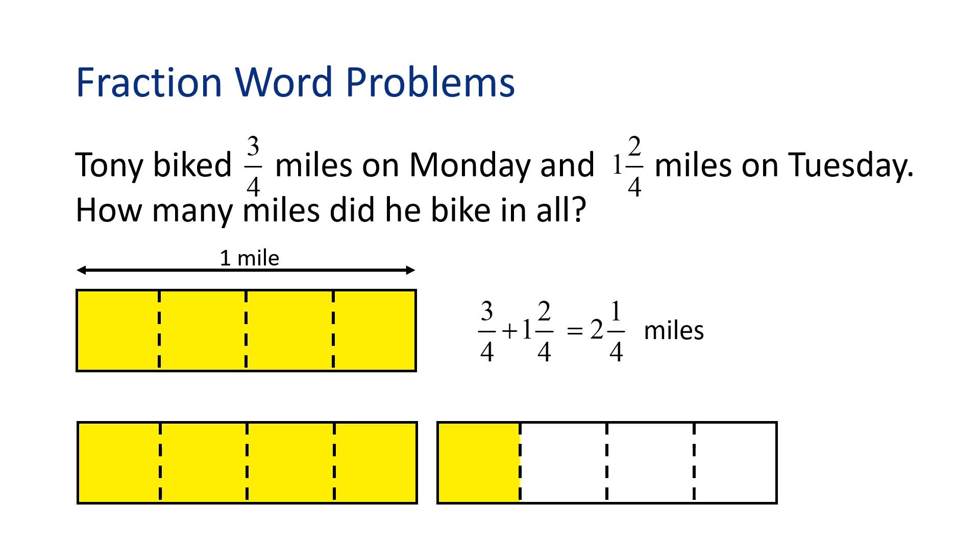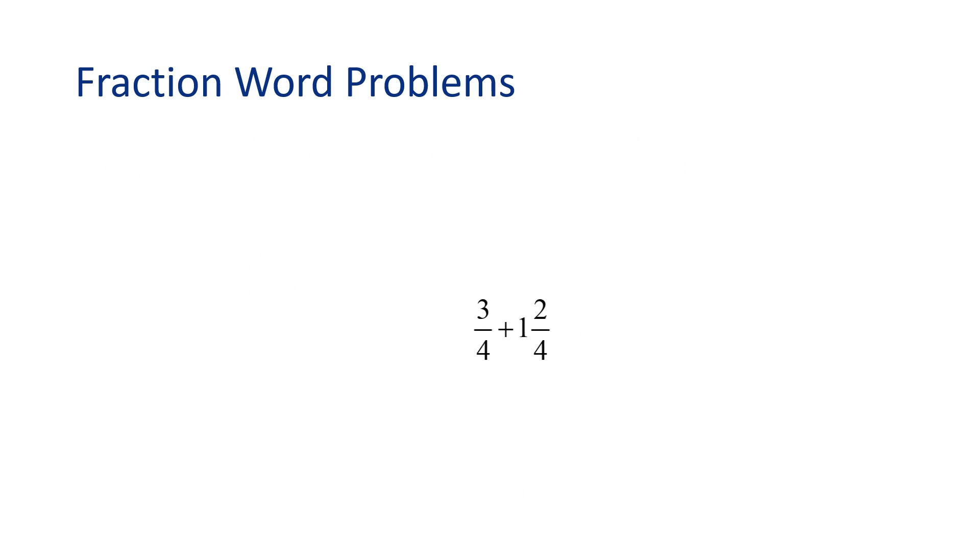But what if I wanted to solve the problem without the picture? I know we want to find three-fourths plus one and two-fourths. To add fractions and mixed numbers, we add the fractional parts because they have like denominators. So let's rewrite the problem as three-fourths plus two-fourths plus one.